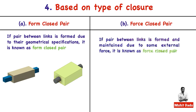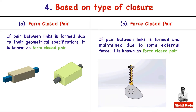A force closed pair is formed and maintained due to an external force. In a cam and follower mechanism, when the cam rotates it pushes the follower up, compressing a spring. The spring force maintains continuous contact between the follower and the cam — this is a force closed pair.